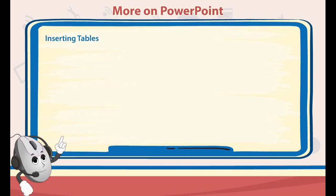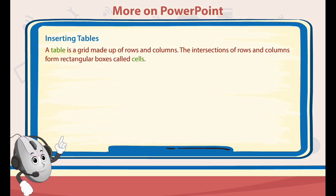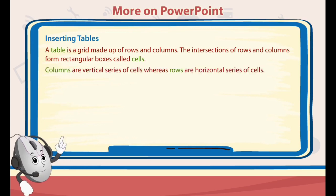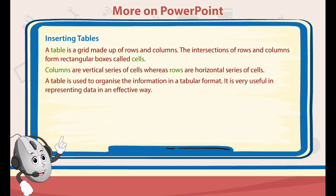Inserting Tables. A table is a grid made up of rows and columns. The intersections of rows and columns form rectangular boxes called cells. Columns are vertical series of cells whereas rows are horizontal series of cells. A table is used to organize the information in a tabular format. It is very useful in representing data in an effective way.